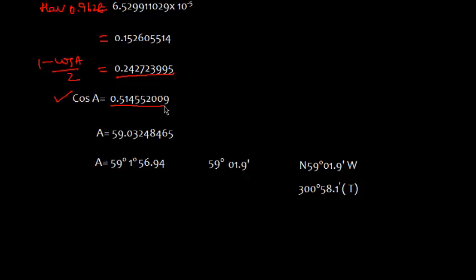And this value, all I have to do, 1 minus cos A by 2 was this. So the value of cos A will be simply 0.145. The inverse of this will give me this value, or simply we can write 59 degrees 01.9.